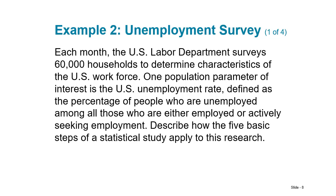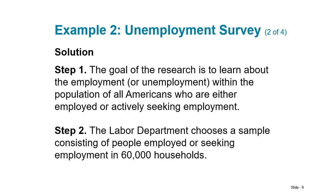Each month the US Labor Department surveys 60,000 households to determine characteristics of the US workforce. One population parameter of interest is the US unemployment rate, defined as the percentage of people who are unemployed among all those employed or actively seeking employment. Describe how the five basic steps of a statistical study apply to this research. Step one — the goal is to learn about unemployment within the population of all Americans.